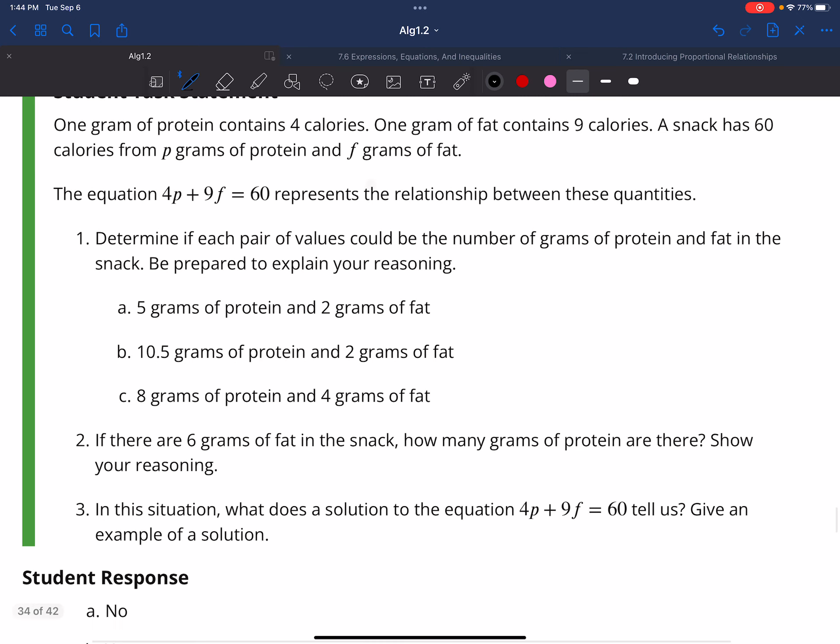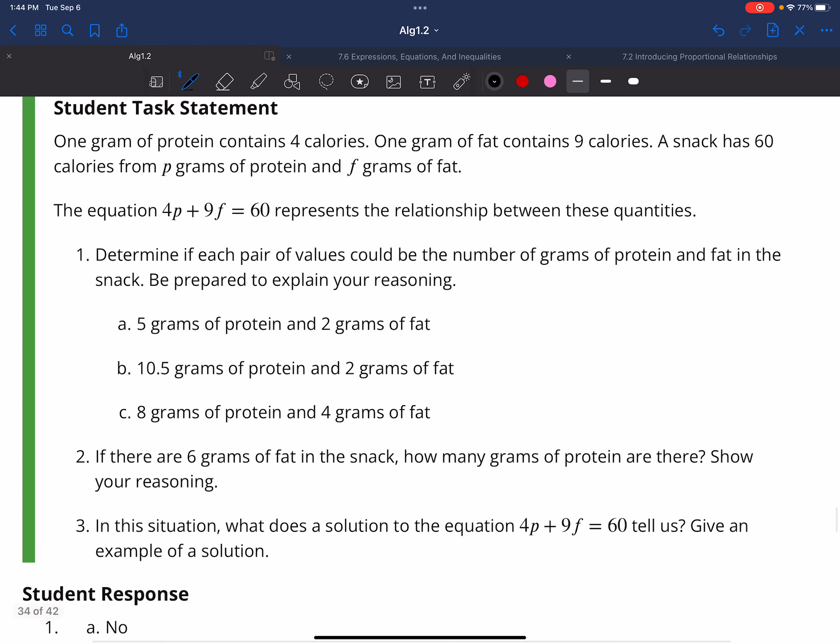The equation 4P plus 9F equals 60 represents the relationship between these quantities, which makes sense because it's a total of 60 and this is 4 calories per protein, 1 gram of protein, and 9 calories per fat, 1 gram of fat. So that's what that means.